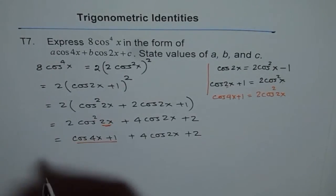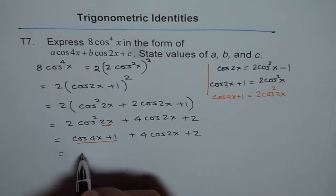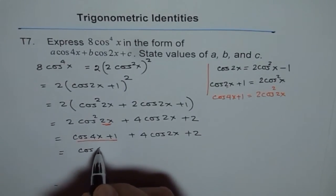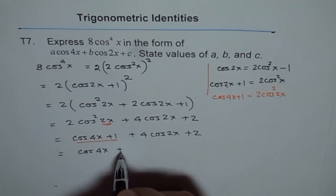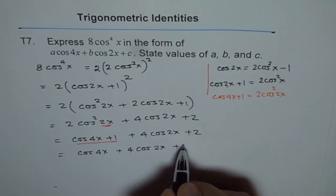Now we can combine the like terms 1 and 2. So we get cos of 4x plus 4 cos 2x plus 3.